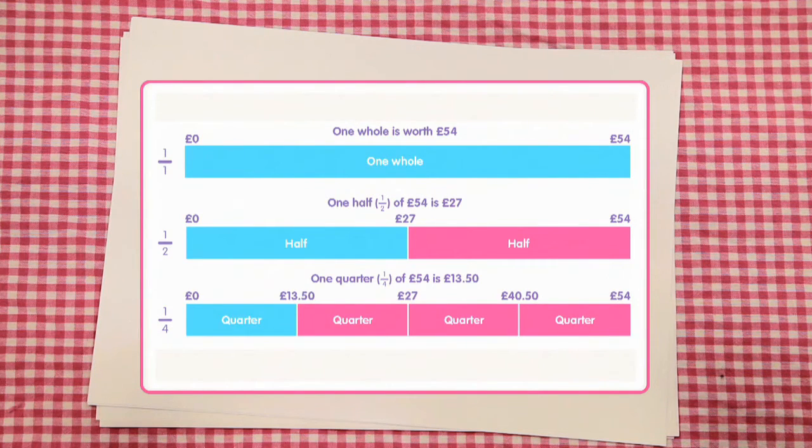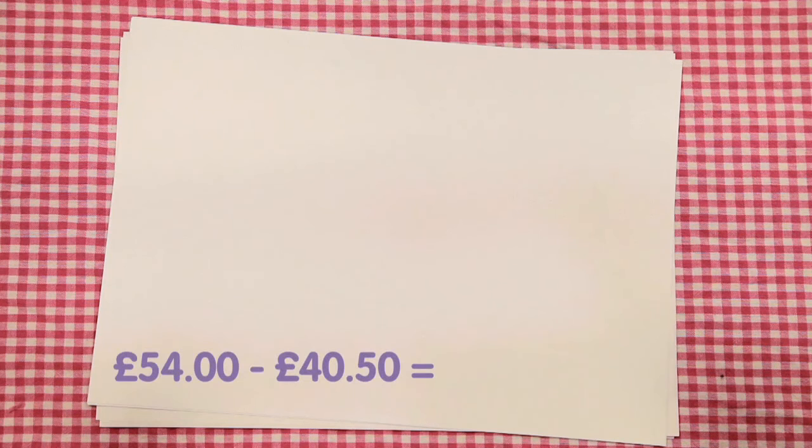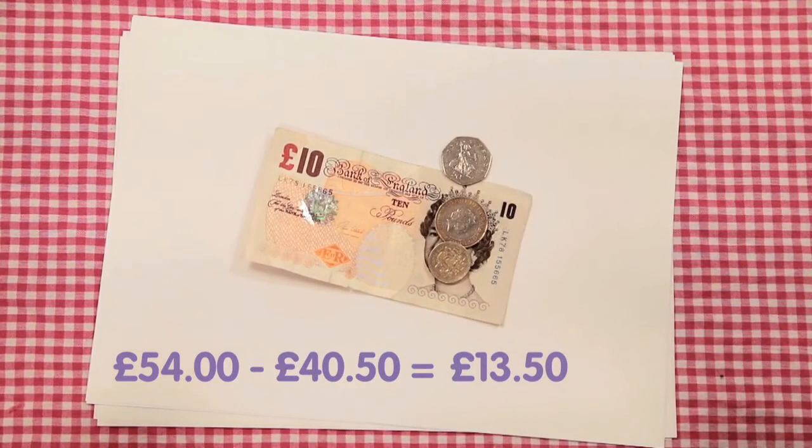The three quarters mark is 40.5 cm, so Rhys has spent £40.50. Now calculate the sum of £54 minus £40.50. This equates to £13.50, which is one quarter of £54.